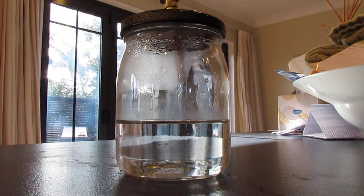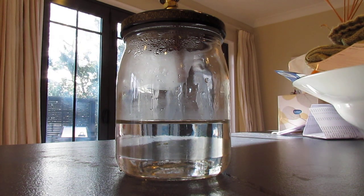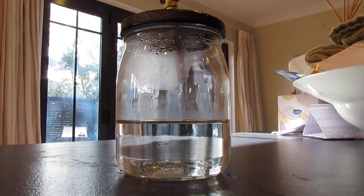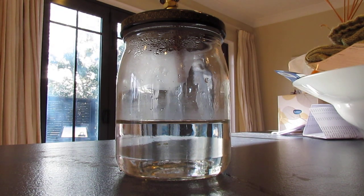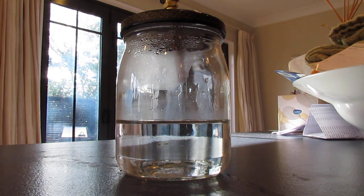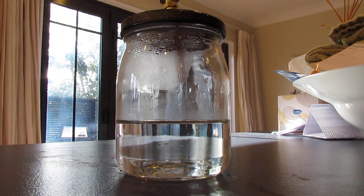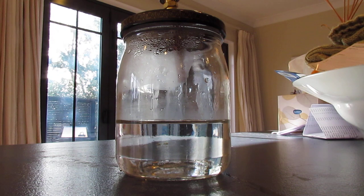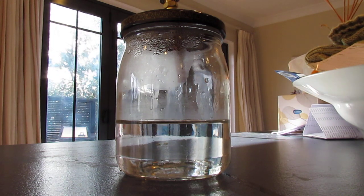So at sea level, one atmosphere, one bar, or 14.696 psi, which is sea level pressure, we need 100 degrees Celsius worth of temperature to get water to boil, to turn to vapor from a liquid to a vapor.